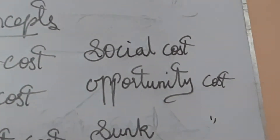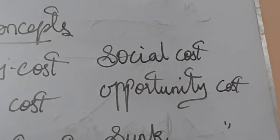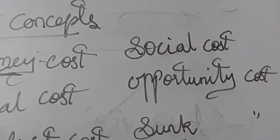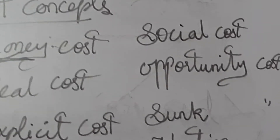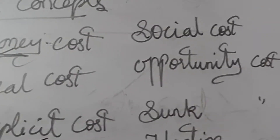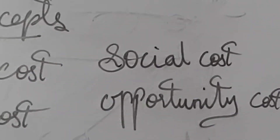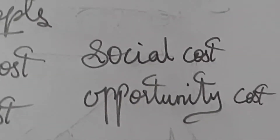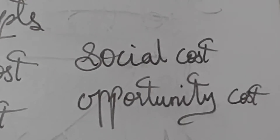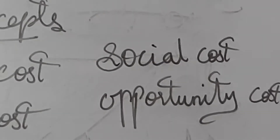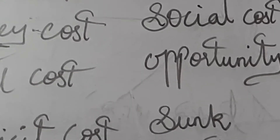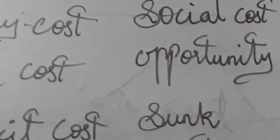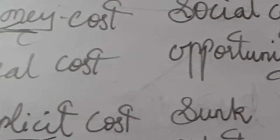Social cost, as defined by Alfred Marshall, represents the efforts and sacrifices undergone by various members of society in producing a commodity — not only those inside the industry but also members indirectly involved from outside. All such services are included in social cost.